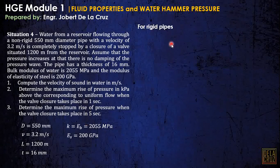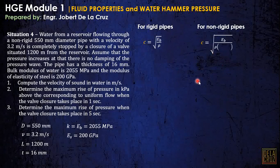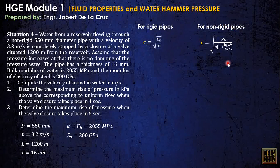There are two cases for solving C. For rigid pipes, C equals the square root of EB over ρ. For non-rigid pipes, the formula has an additional factor because we consider the elastic property of the steel pipe — when pressure is high, the steel can expand. So a ratio involving ES, pipe diameter, and thickness is added. If ES and pipe thickness are given, that is the hint to use the non-rigid pipe formula.